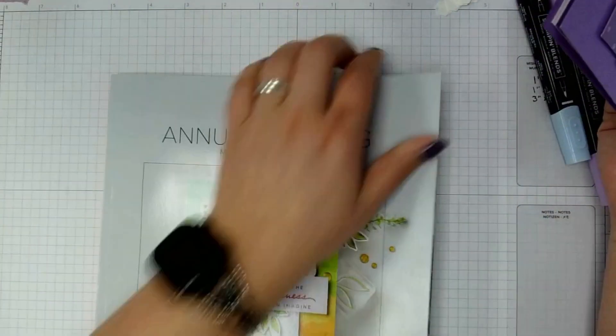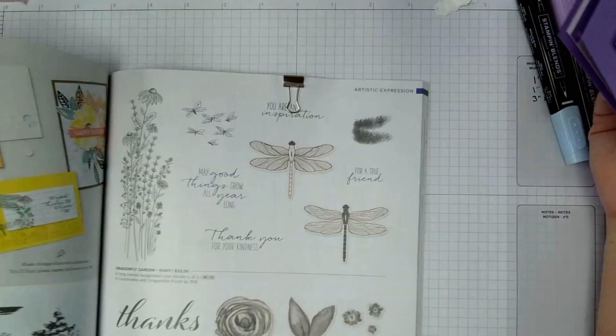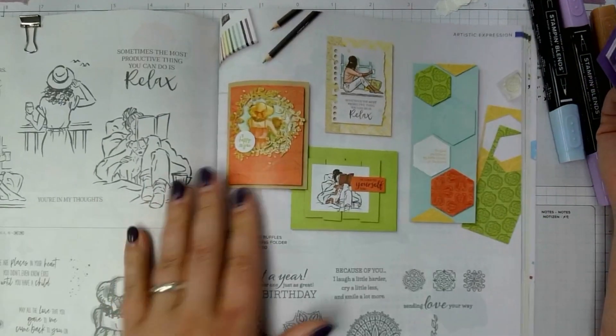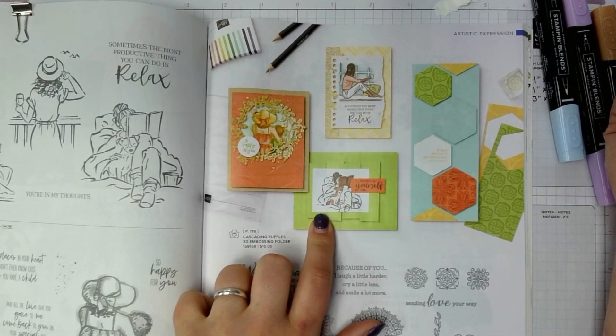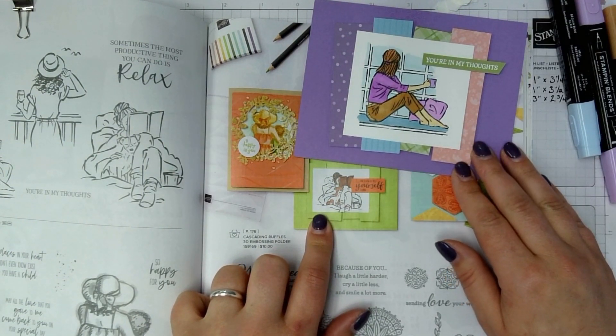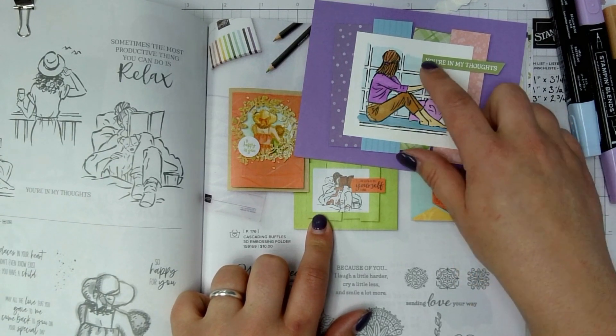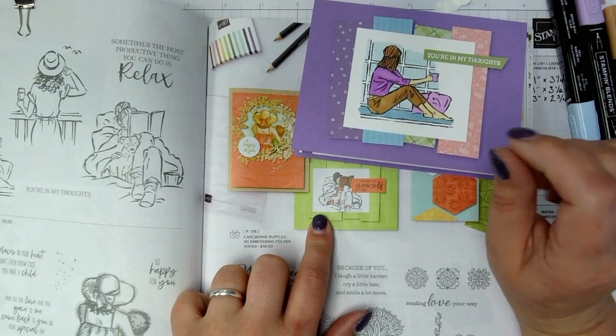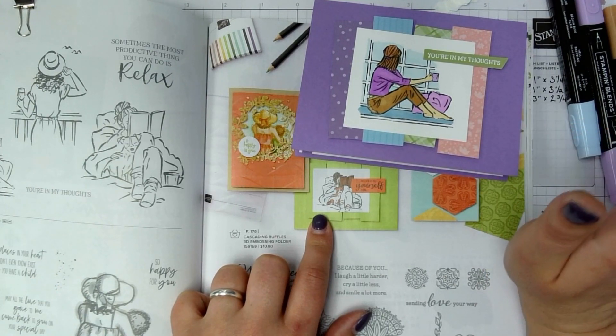There is our version of the card from the catalog. Again, you can find that stamp set on page 112 and the original card here on page 113. So it's just stepped up a little. If you don't have the heat embossing, of course you could leave that out. And I did use an extra set of blends for this one.